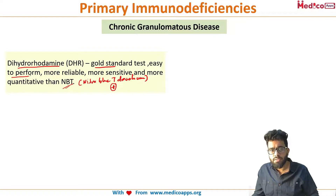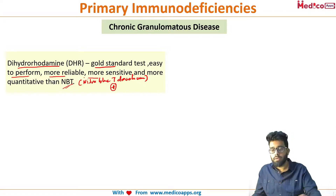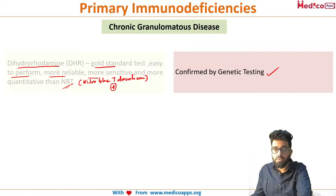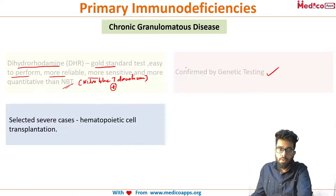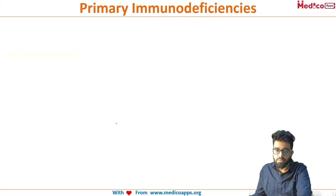A much superior test called the dihydrorhodamine test (DHR) is now the gold standard. It is easier to perform, has no subjective errors, and is more reliable and sensitive than NBT. NBT is no longer the gold standard. Diagnosis can be confirmed with genetic testing, and in very selected severe cases, hematopoietic stem cell transplantation is an option.